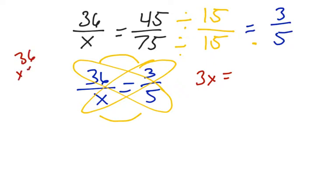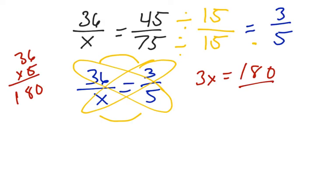36 times 5 gives us 180. In order to isolate the variable, we need to divide both sides by 3, and we're left with X equals 60.